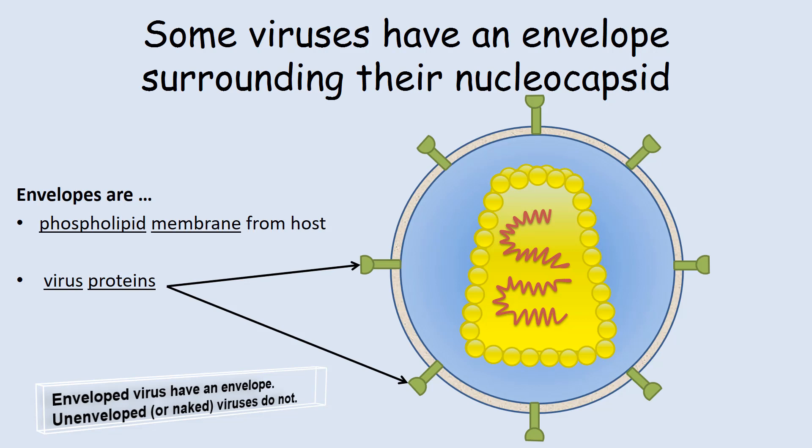The studded proteins are encoded by genes found in the virus's genome and are thus virus-derived. Because of this, we say that the envelope is made by a collaborative effort of the host and the virus. This drawing resembles the human immunodeficiency virus, HIV.